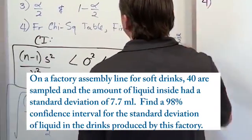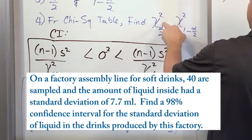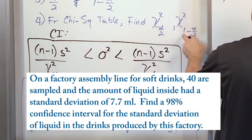And step four is telling us from the chi-squared table, we need to find these values of chi-squared alpha over 2 and chi-squared 1 minus alpha over 2.